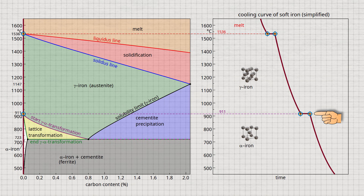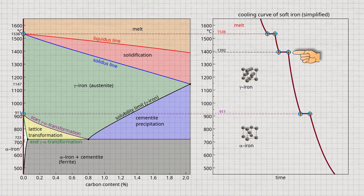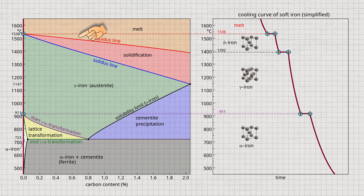However, the cooling curve of soft iron actually shows another thermal arrest at 1392 degrees Celsius. This is because soft iron does not solidify directly in the face-centered cubic structure of gamma iron, but in the body-centered cubic structure of so-called delta iron. Only at 1392 degrees Celsius does the face-centered cubic gamma iron form. Strictly speaking, the delta phase also affects the iron-carbon phase diagram, and additional phase regions are formed in the upper left corner of the diagram.